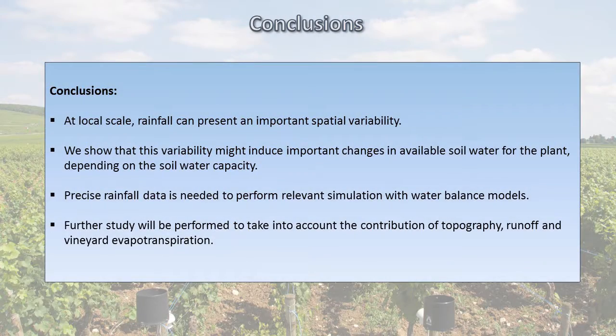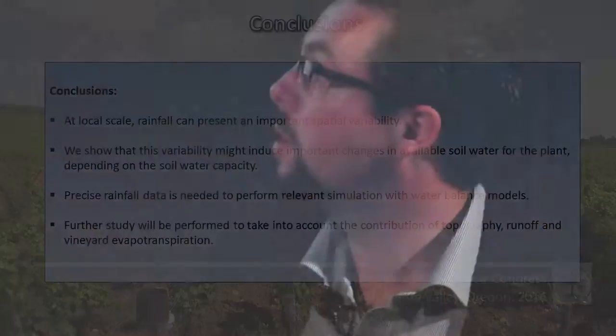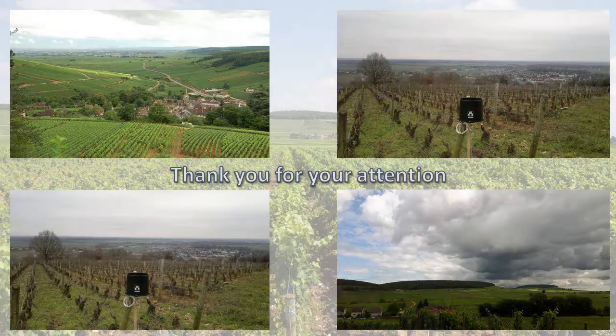To conclude, at local scale we know that rainfall can present important spatial variability, both with and without convective events. We have shown that this variability can induce important changes in available soil water for the vine, depending on soil water capacity. We therefore need precise rainfall data to perform relevant simulations with water balance models. The next step for this study is to perform runs with different models to take into account the contribution of topography, runoff, and inter-vine evapotranspiration.